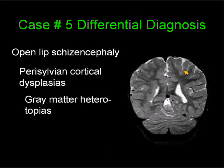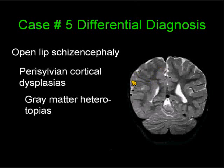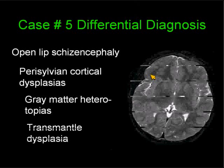Gray matter heterotopias — we all see them quite often. Nodular in this type, abutting the lateral wall of the ventricle, same signal intensity as the cortex. Notice that the overlying cortex is a little bit thin and dysplastic. There are lines from the radial glial fibers communicating the nodular heterotopias with the dysplastic cortex. In this case, the entire cerebral hemisphere is a little bit smaller than the contralateral hemisphere.